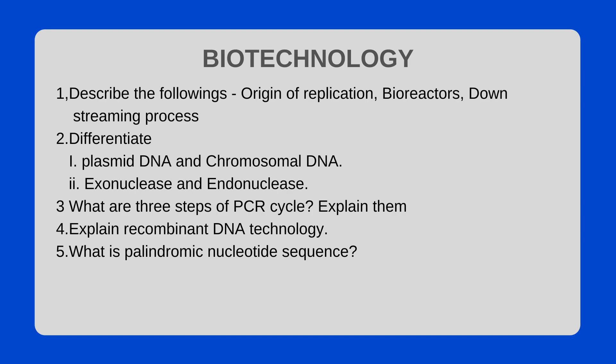Biotechnology: Describe the following — origin of replication, bioreactors, and the downstream process. Differentiate between plasmid DNA and chromosomal DNA, and between exonuclease and endonuclease. What are the steps of the PCR cycle? Explain them. Explain recombinant DNA technology. What is a palindromic nucleotide sequence?